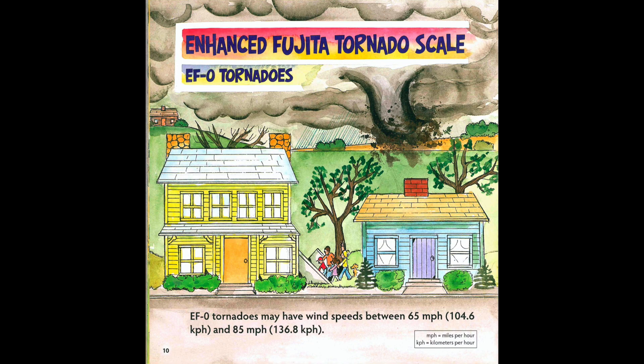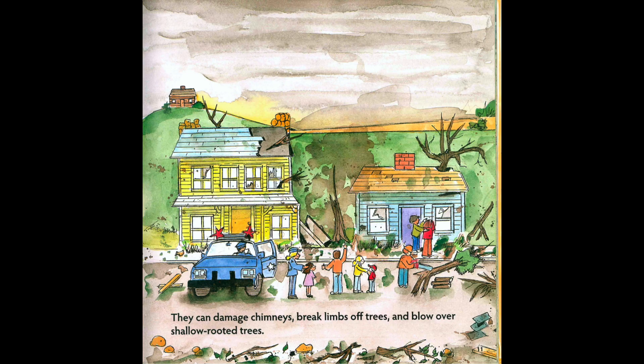Enhanced Fujita Tornado Scale — EF0 Tornadoes. EF0 tornadoes may have wind speeds between 65 miles per hour (104.6 kilometers per hour) and 85 miles per hour (136.8 kilometers per hour). They can damage chimneys, break limbs off trees, and blow over shallow-rooted trees.